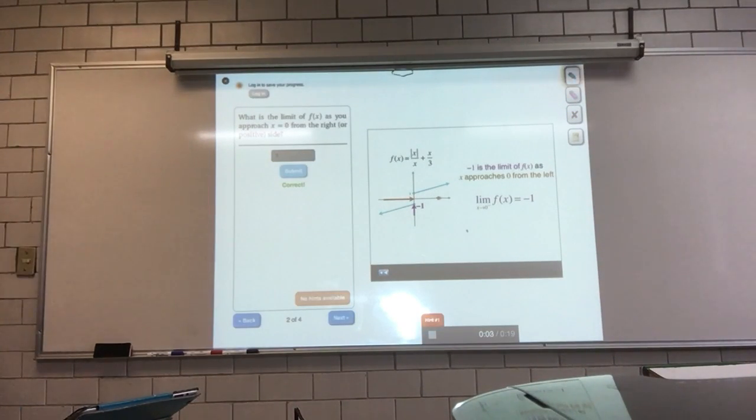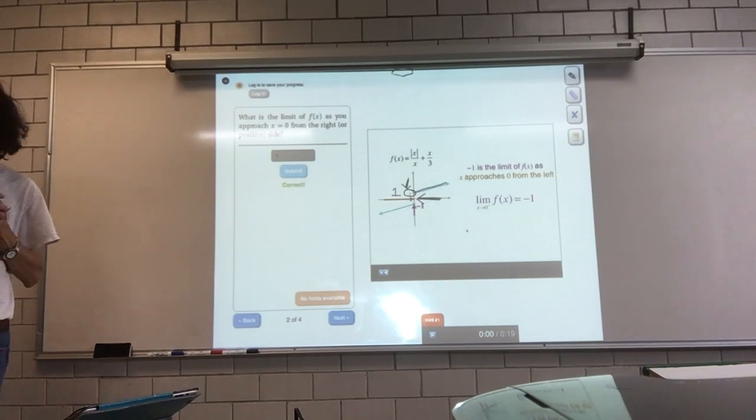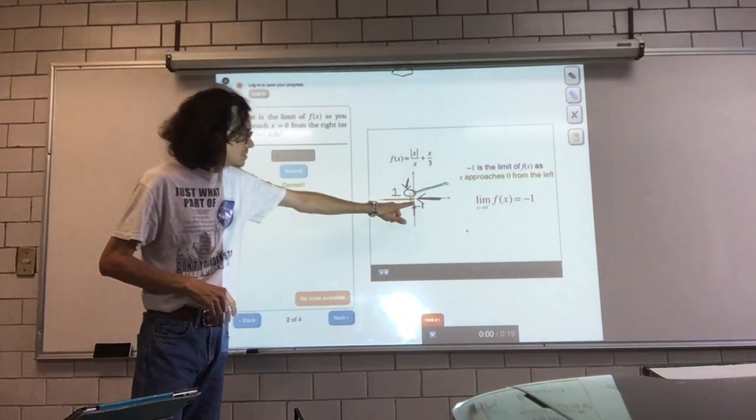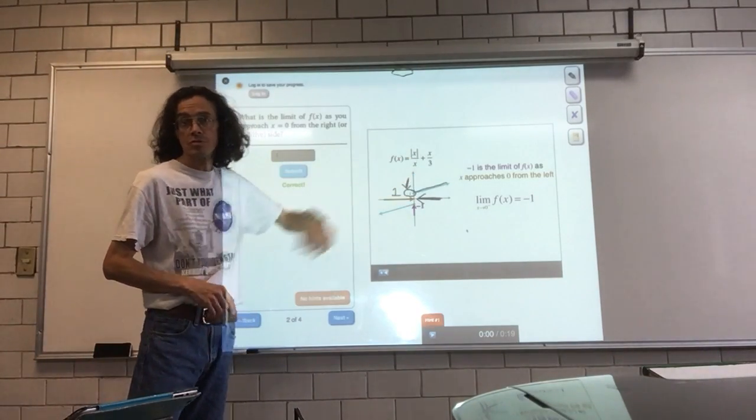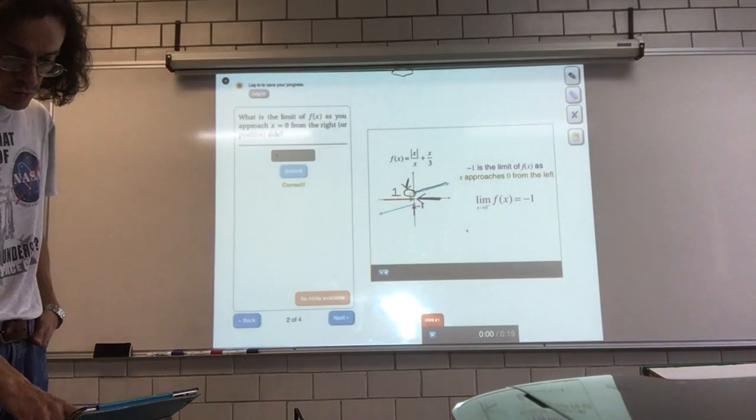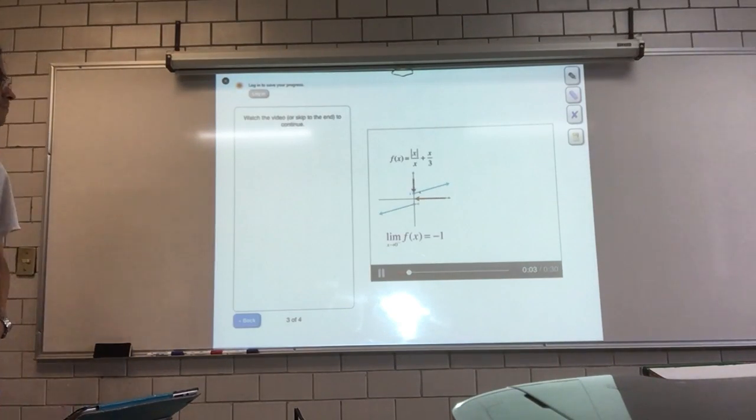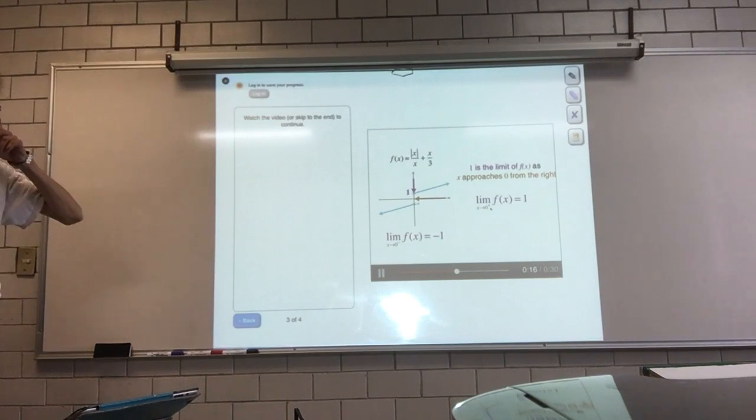As x approaches 0 from the positive side, that is over here, f of x gets closer and closer to 1. It gets smaller and smaller, but it's always above 1, which is there. So the limit as x approaches 0 from the right is 1. For this function, f of x gets close to plus 1 as x gets close to 0 from the right. Here's a limit that says exactly that. Again, to emphasize that we're only looking at when x gets close to 0 from the right side, we use a little plus sign above the 0.